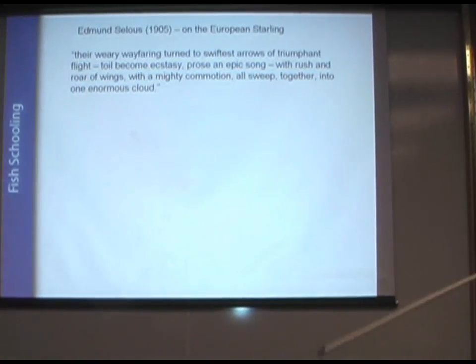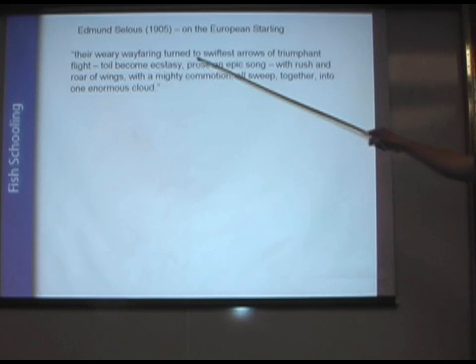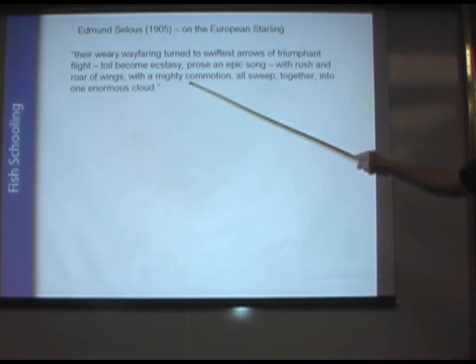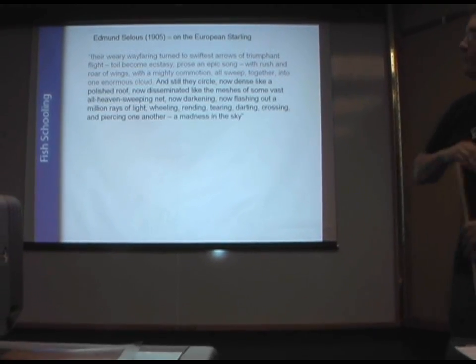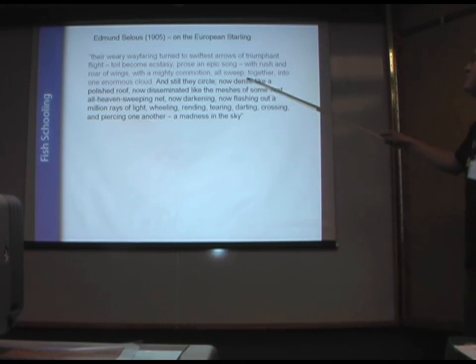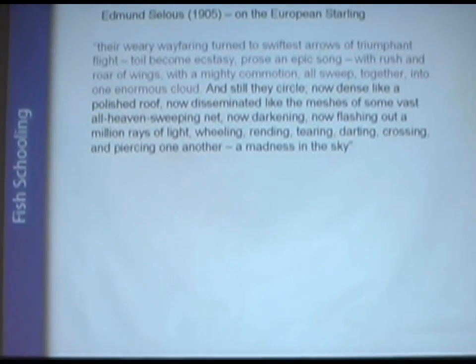And Edmund Selous, in 1905, wrote this amazing book, and he talks about these phase transitions, where there's the weary wayfaring, which is the stationary group in the sky, suddenly turns to the swiftest arrows of triumphant flight. There's a mighty commercial all sweep together into one enormous cloud. And he was astonished by these types of groups. And still be circled, now dense, like a polished roof, disseminated by the measures of some vast old heaven-sweeping net. A madness in the sky, he describes it as.